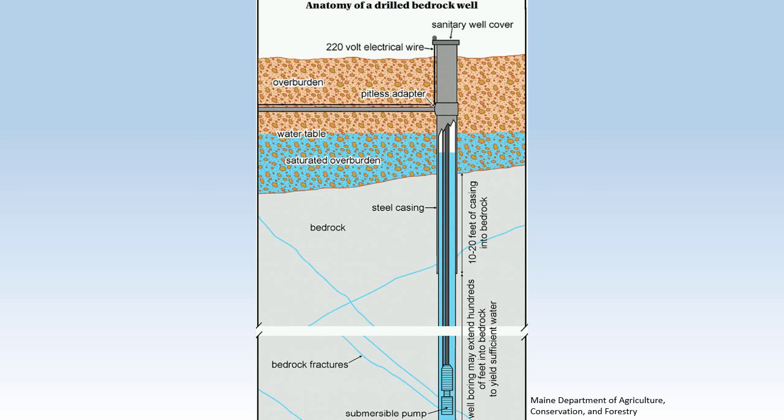In some instances, the casing may extend the entire length of the well, where the rock isn't solid enough to ensure it won't crack or cave in, or where the water quality of some geologic units requires that they be sealed off with the casing. Depending on where you live, the location of the fractures near a bedrock aquifer may be well understood or almost unknown.